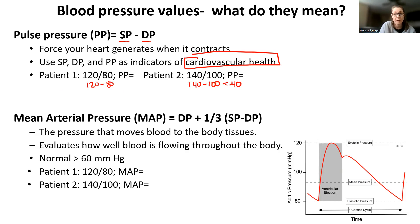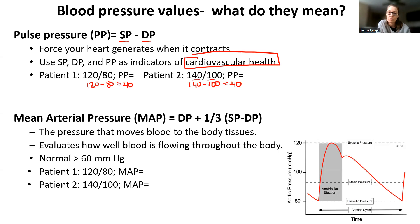You can have a normal blood pressure of 120 over 80, and also 140 over 100, and the pulse pressure is the same — 40 in both cases. That tells us the heart is still working properly even with high blood pressure, and you're within the normal pulse pressure range. We might still put you on blood pressure medication, because pulse pressure helps us assess heart health overall.